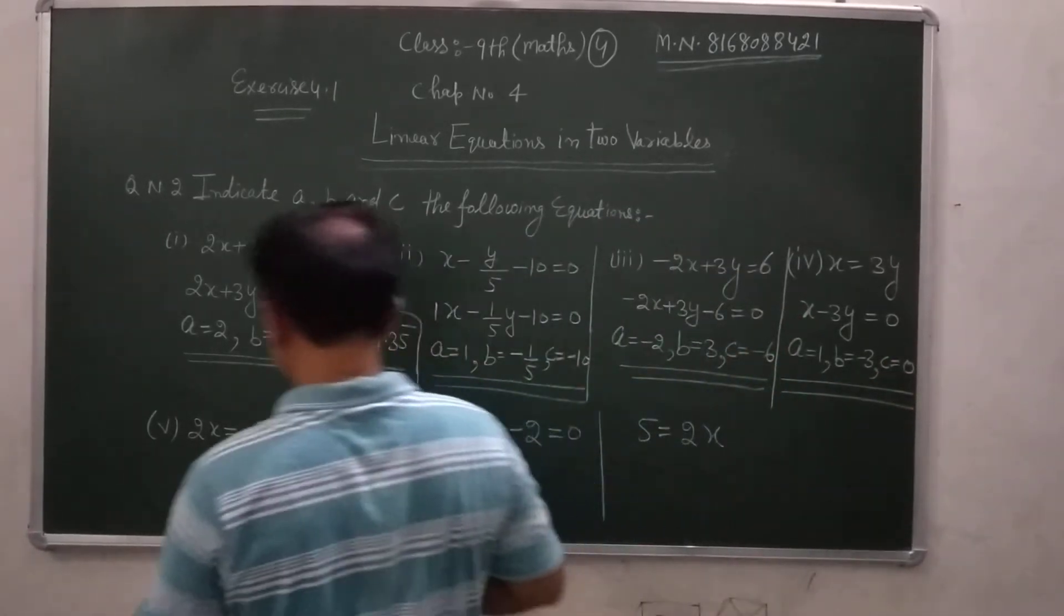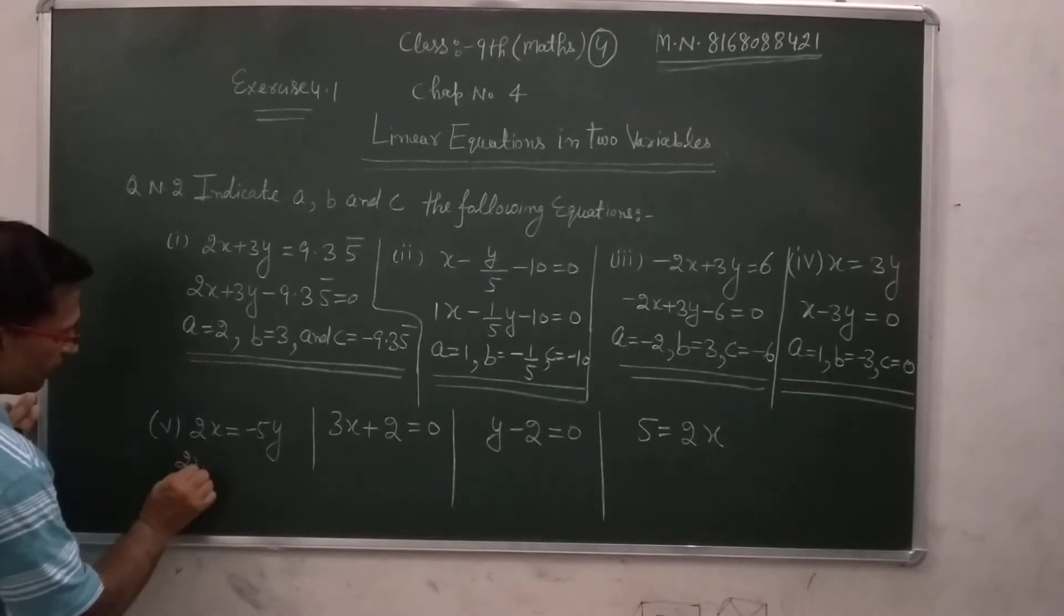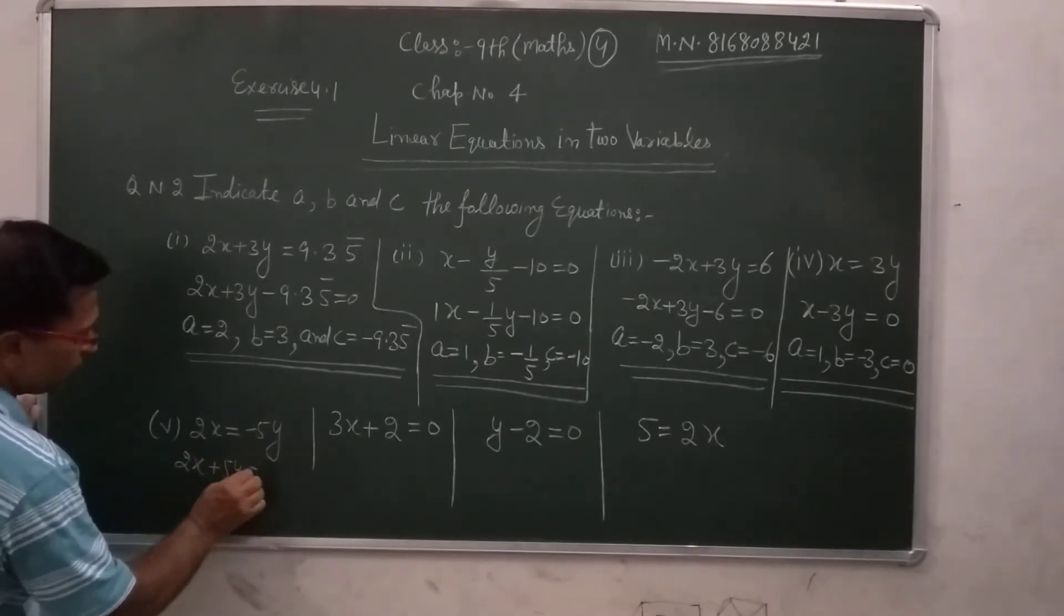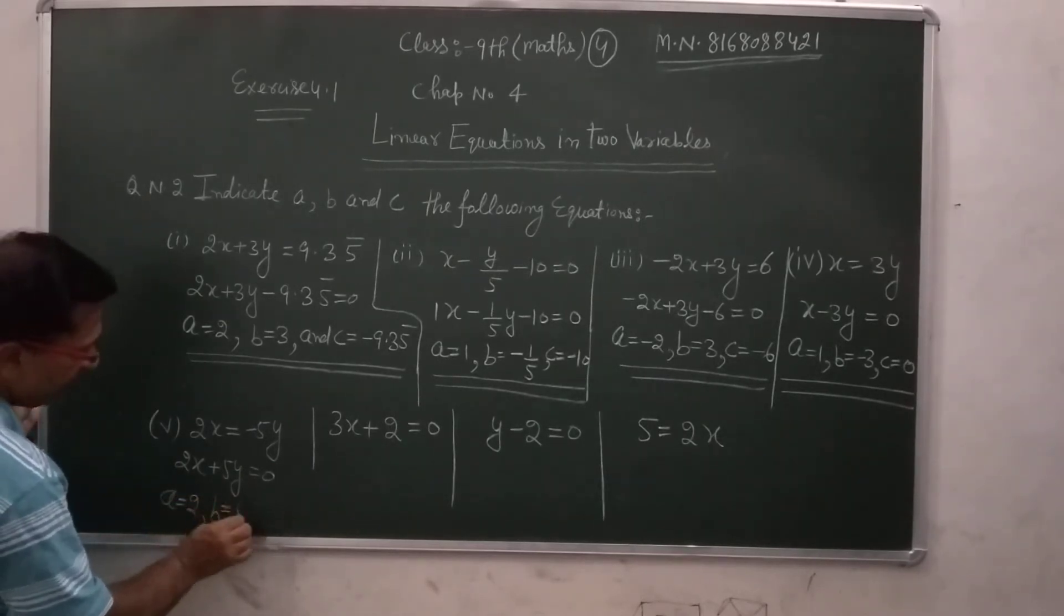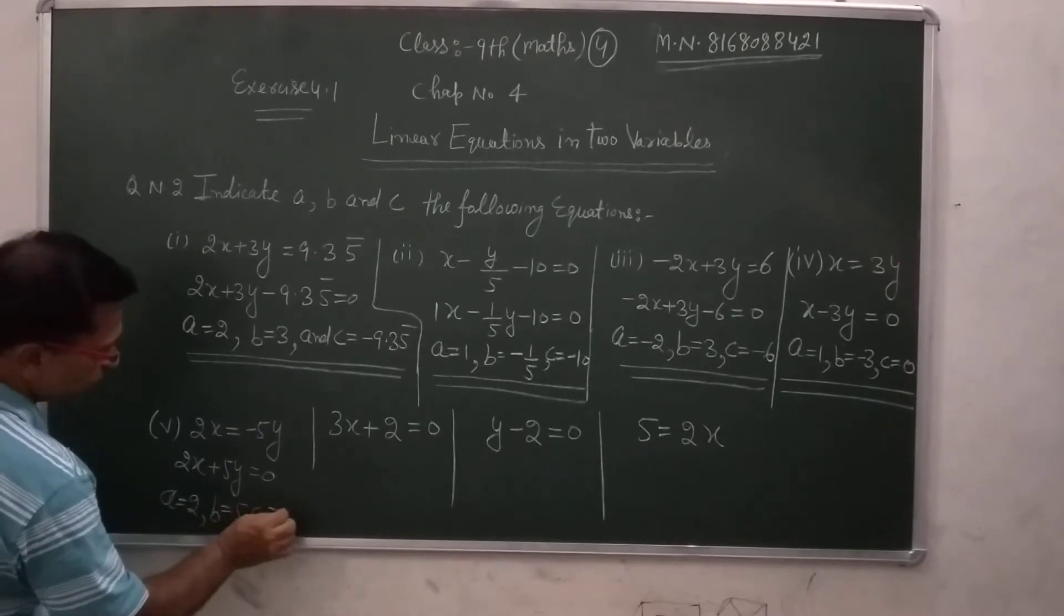Here we have 2x minus 5y is equal to 0. A is equal to 2, B is equal to 5, C is equal to 0.